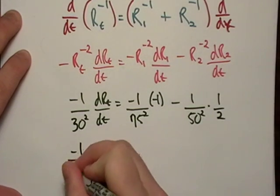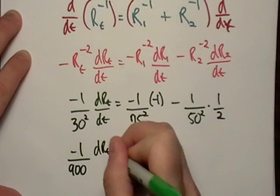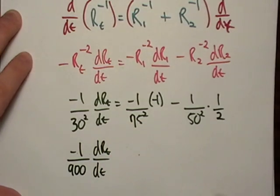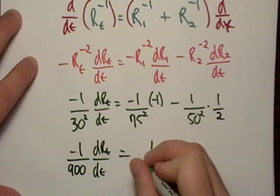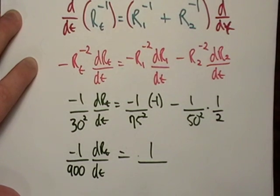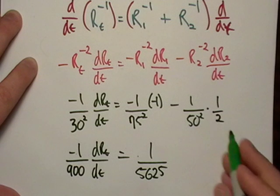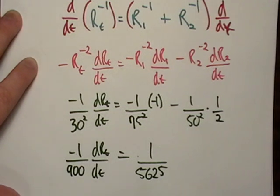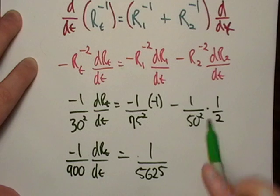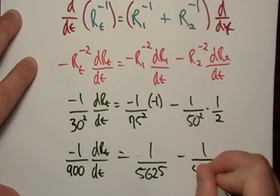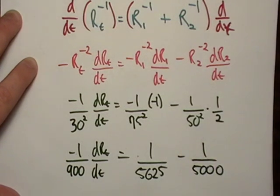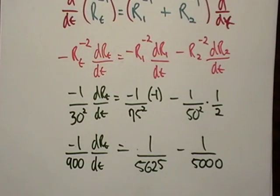So, this is going to be negative 1 over 900 dRe dT. This is going to be equal to 1 over 75 squared. That's 5625. I did that on my calculator. Ain't no way in hell I did that in my head. And 50 squared, that's 2,500 times 2 is 5,000.